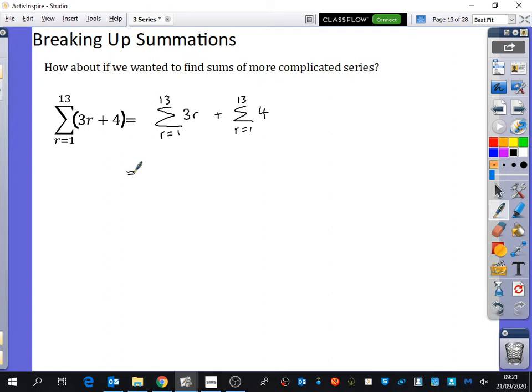And then I'm going to split this further. I'm going to take out a factor of 3, because if everything inside the summation has been multiplied by 3, that's the same thing as working out the summation and then multiplying it by 3 afterwards. So you can pull the 3 out to the front. So this is what it means by breaking up a summation.